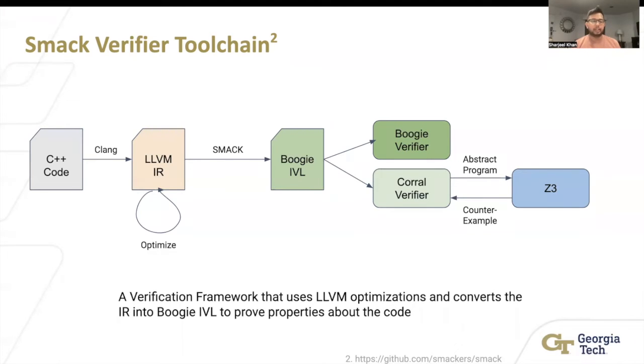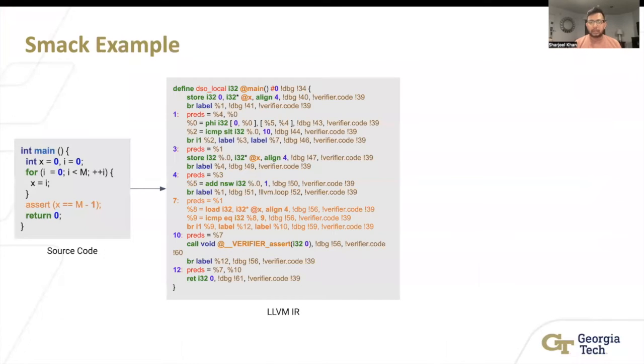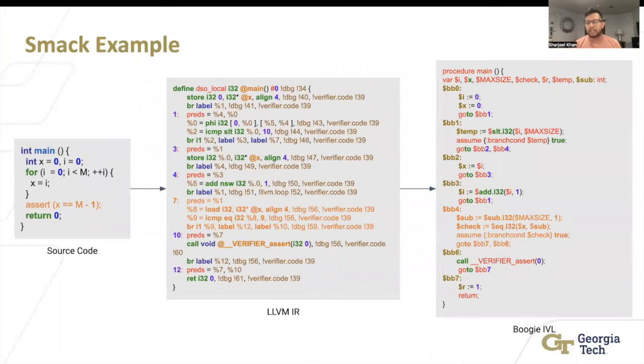I'll explain this better in the next slide. So imagine the source code becomes this LLVM IR, it becomes this Boogie IVL. The area highlighted, area shown in orange is the assertion check. It's basically a simple assert of x equals m minus 1. In basic block 7, it has a compare of equal, and if it's true, it jumps to the return. But if it is false, it goes to verifier assert 0, basically saying that you're asserting that this is false, and it will basically give you an error.